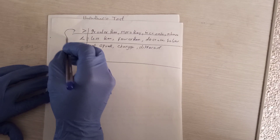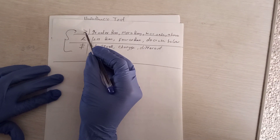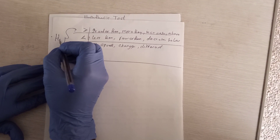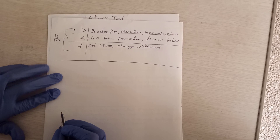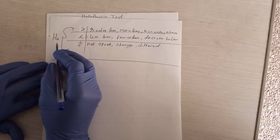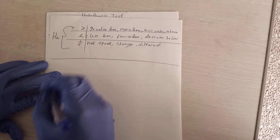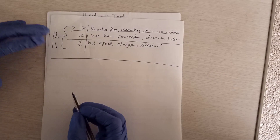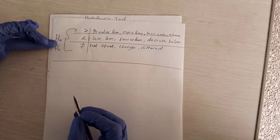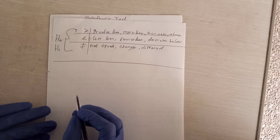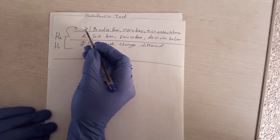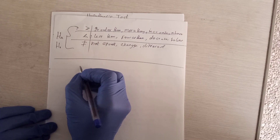Now, whenever you see these three signs — greater than, less than, and not equal to — you should know they are referring to the alternate hypothesis, Ha, also written as H sub 1. Another way of writing the alternate hypothesis is H1. You can write it either way.